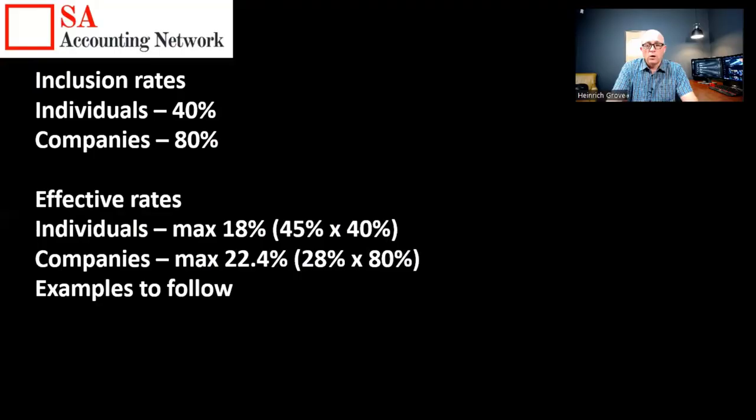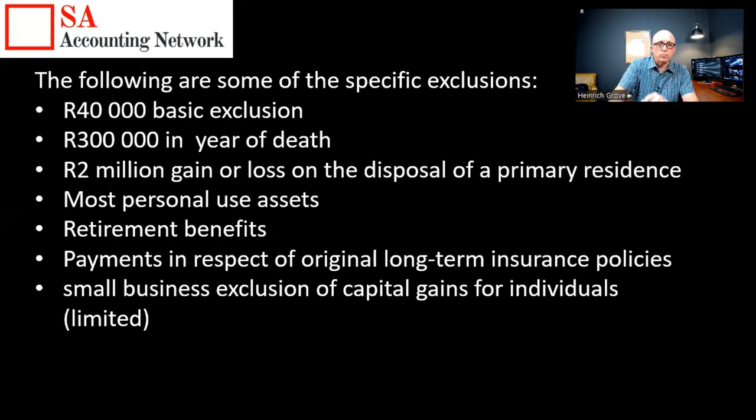The capital gains tax effective rate for companies is much higher than for individuals, which is one of the cons to be careful about when looking at investment properties. Avoid buying investment property in a company's name, especially if you have low taxable income, because you can end up paying a lot more tax. There will be examples to follow.